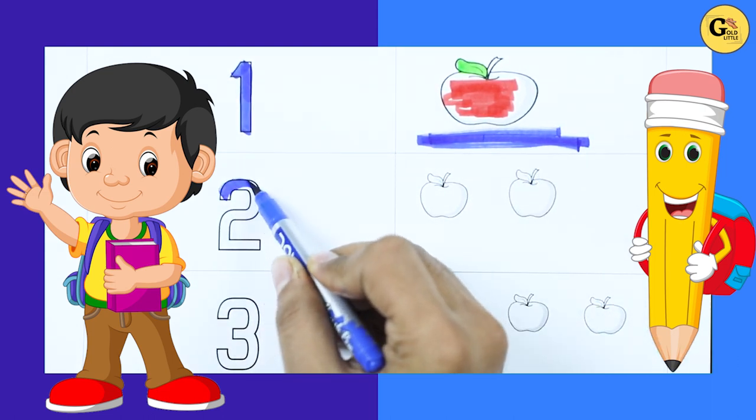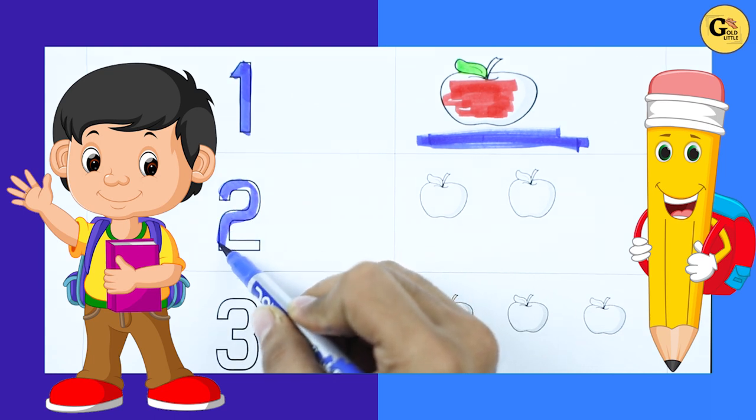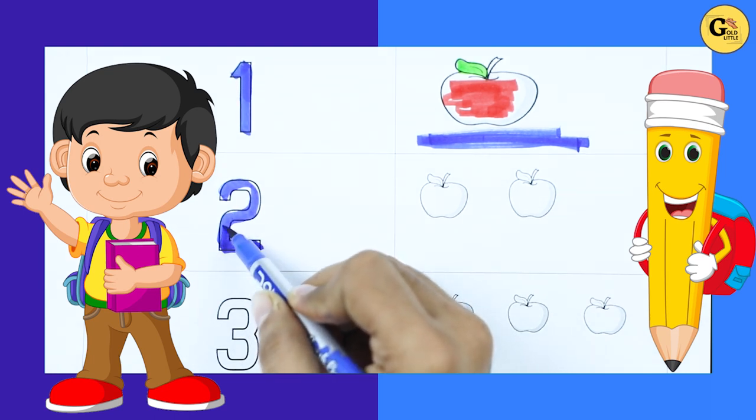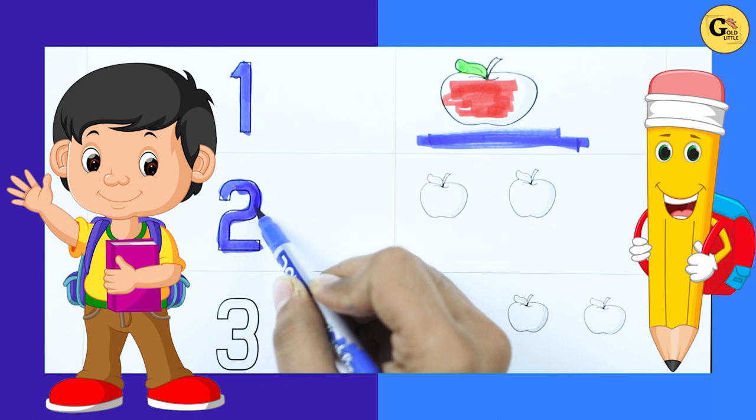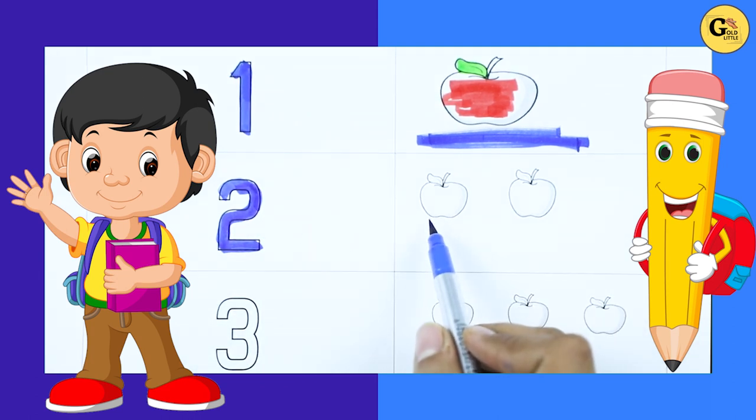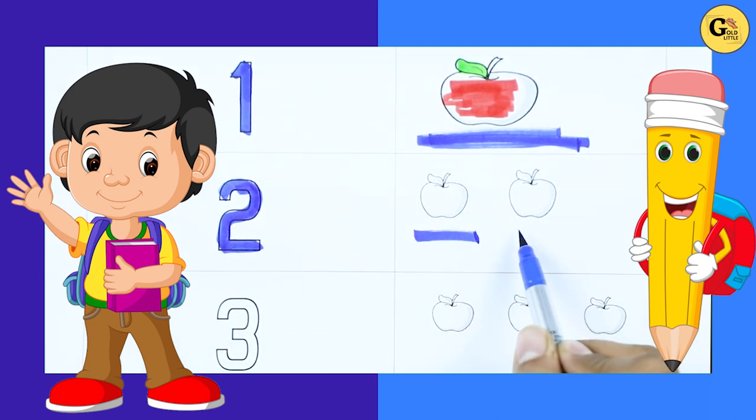Number 2. Number 2 with blue color. How many apples here? 1 apple, 2 apples. It's 2 apples.